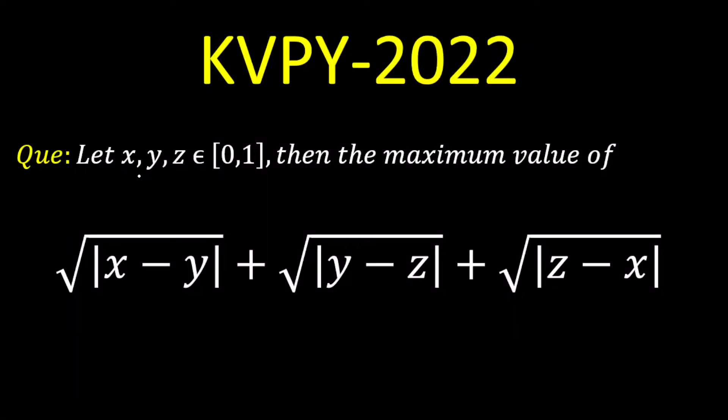Hello everyone, so today's question is if x, y, z belongs to the closed interval 0 to 1, then find the maximum value of the given expression.